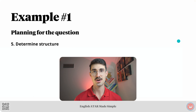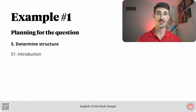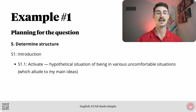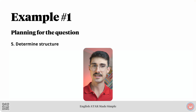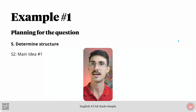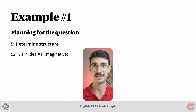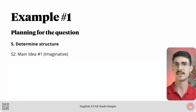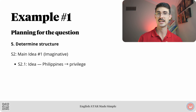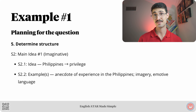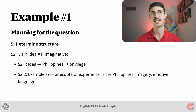Step five: determine structure. Section one is the introduction, and in that intro I will activate the audience by referring to a hypothetical situation of being in various uncomfortable situations, which alludes to my main ideas. Section two discusses main idea number one with a focus on imaginative language features. The main idea I'll be discussing refers to being in the Philippines and what I learned about privilege. The example I will use is an anecdote of my experience in the Philippines, employing imagery and emotive language.